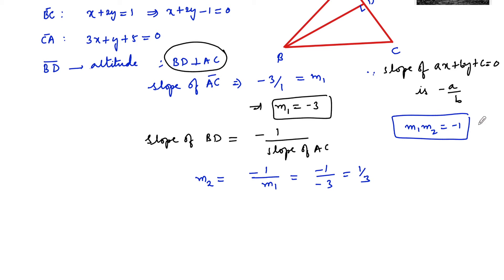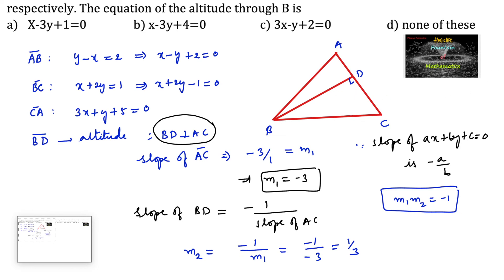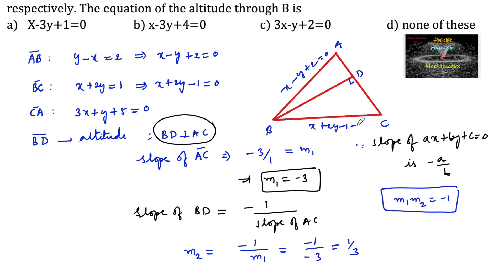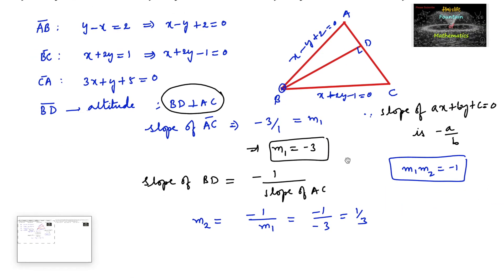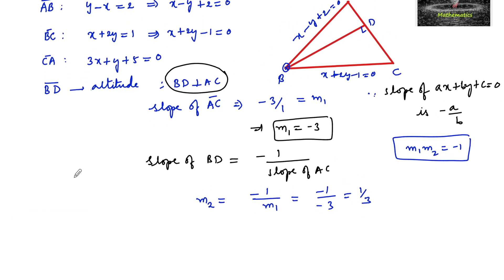To find the equation of BD, we need the coordinates of vertex B. So let us solve side AB, which is x minus y plus 2 equals to 0, and side BC, which is x plus 2y minus 1 equals to 0, to get the point of intersection, which is vertex B.